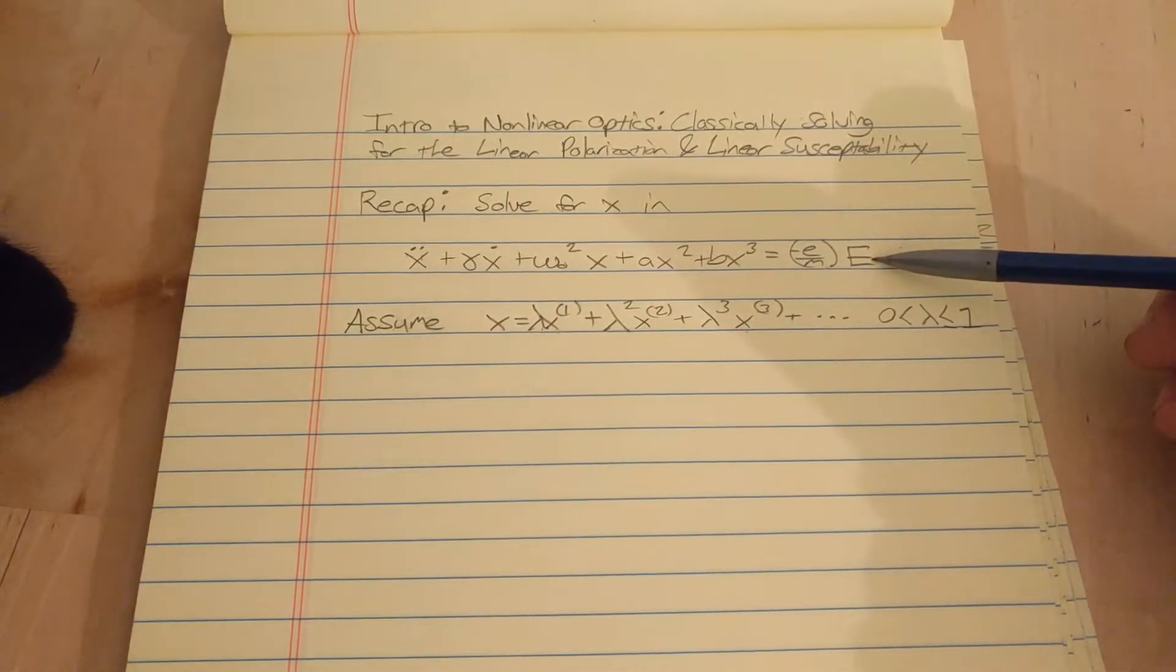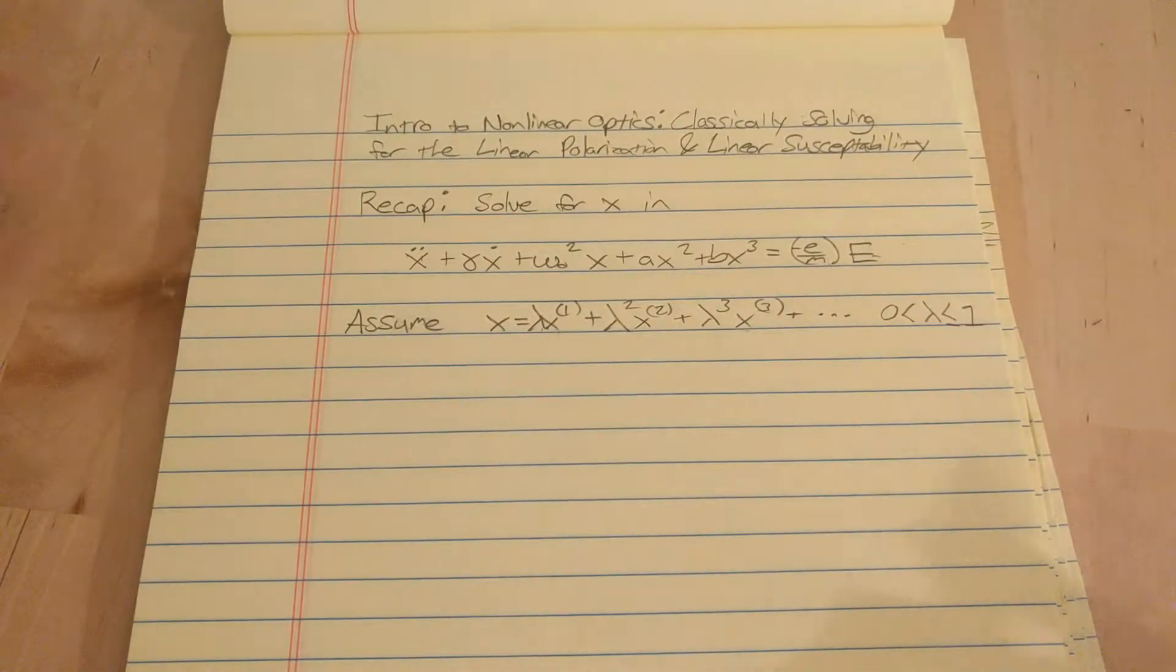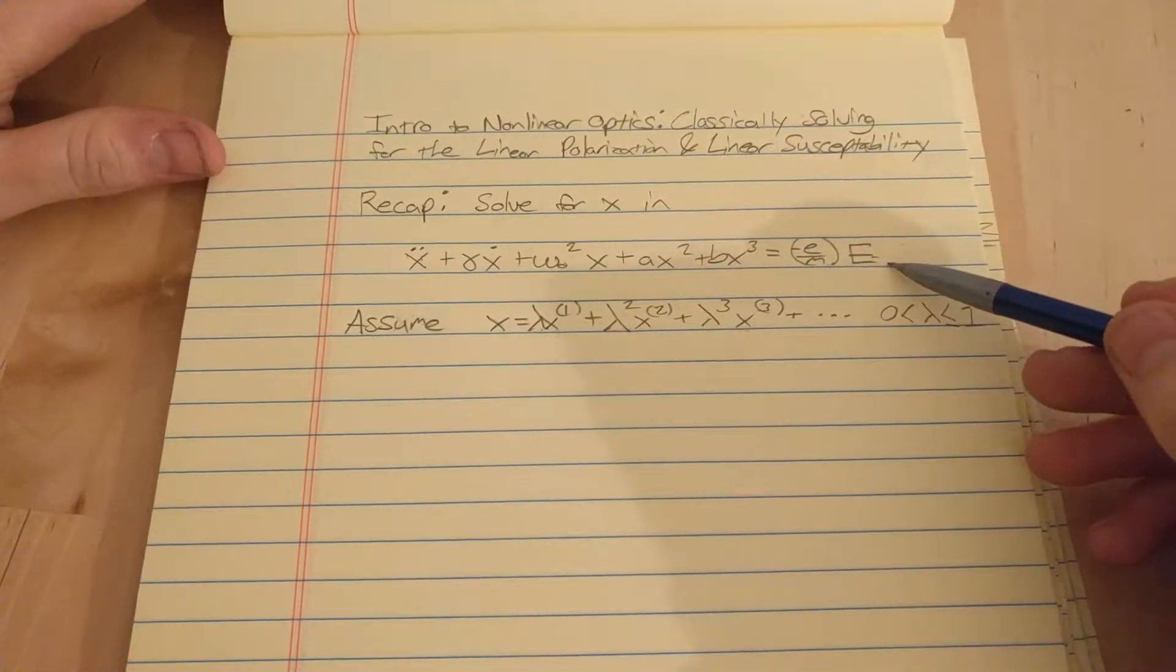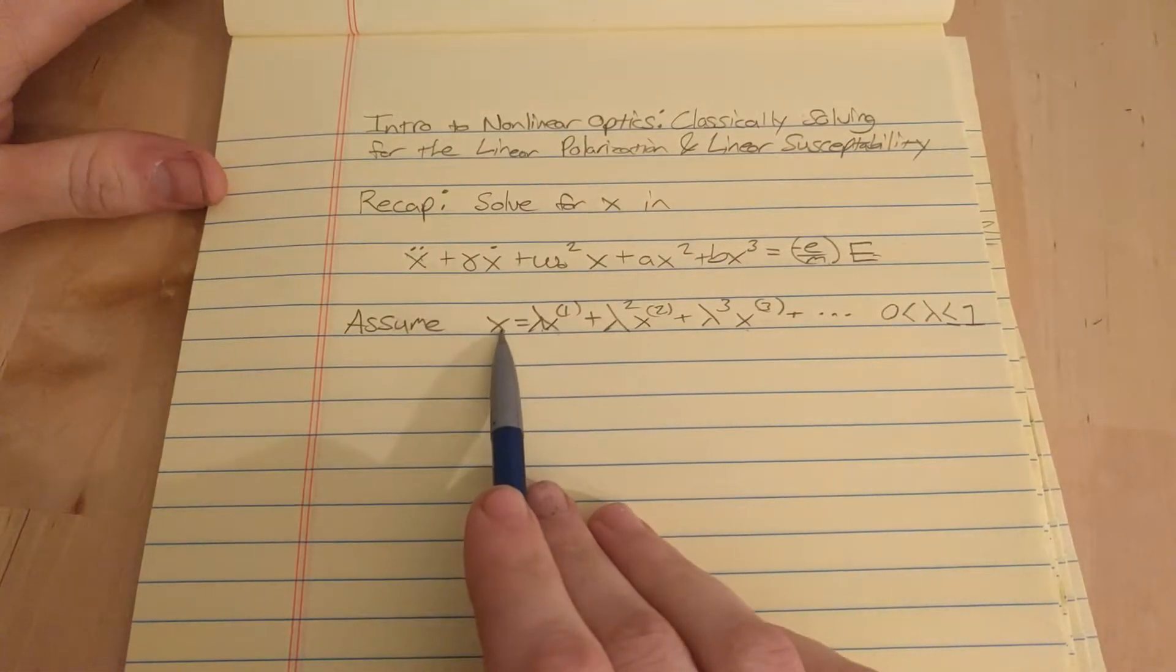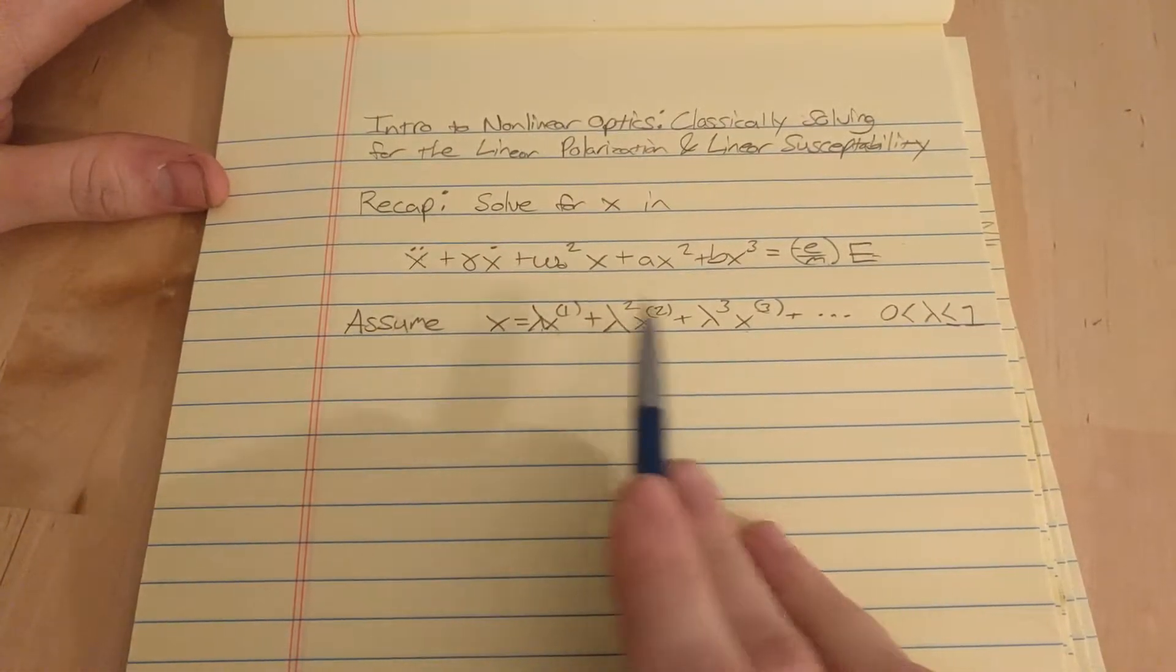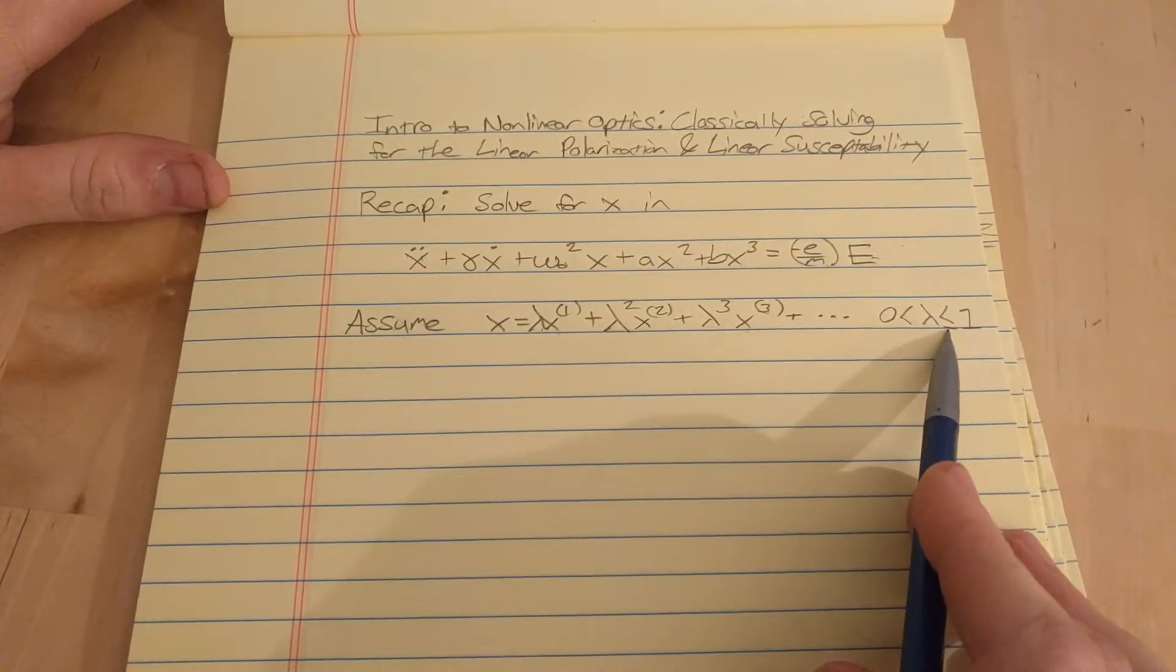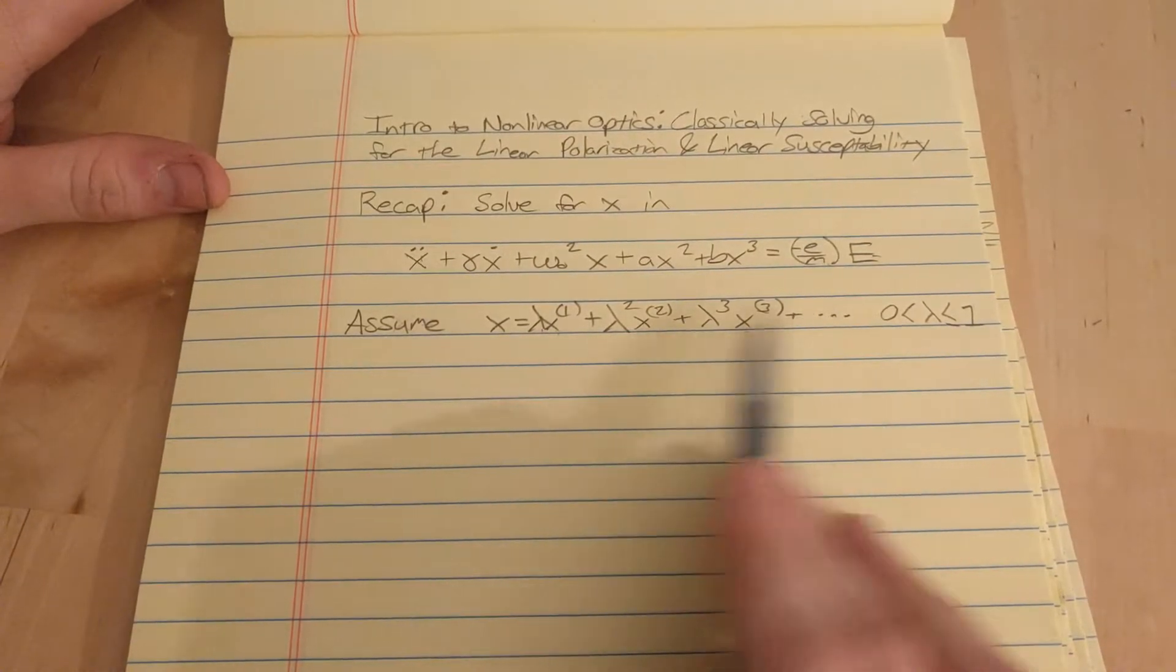And so, x is the position of a point charge, and we assume we have a material made up of a large number of point charges. So I was saying in the last video, we expand x in a perturbative series like this, and this constant lambda is between 0 and 1, so that the higher order terms get smaller and smaller and smaller.